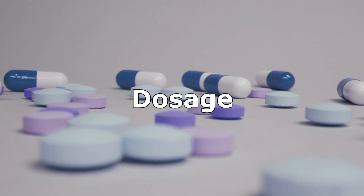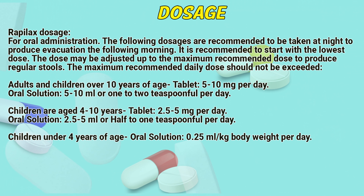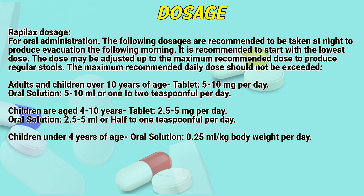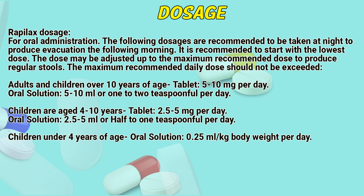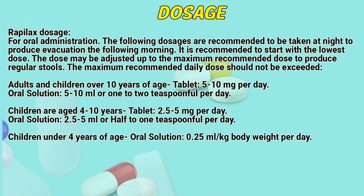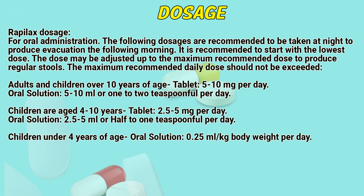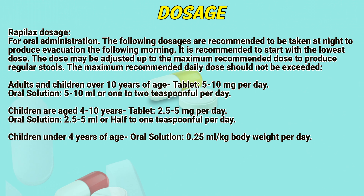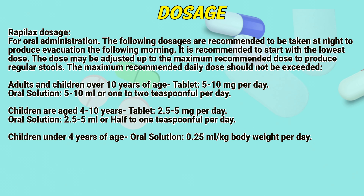How to use Repilax — dosage. For oral administration, the following dosages are recommended to be taken at night to produce evacuations the following morning. It is recommended to start with the lowest dose. The dose may be adjusted up to the maximum recommended dose to produce regular stools. The maximum recommended daily dose should not be exceeded.